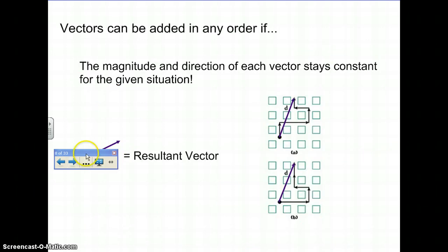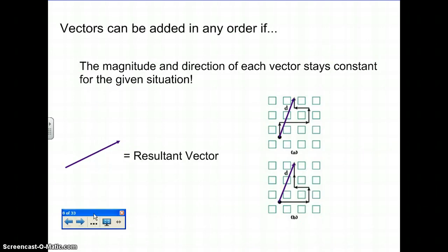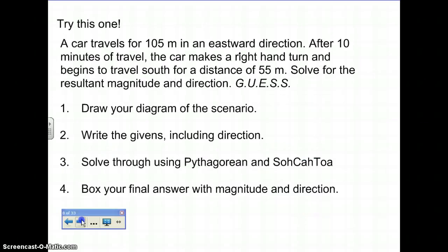Vectors can be added in any order. You could move this way first, this way second, this way third, and still end up at the same placement, as long as direction and magnitude do not change. You can order them in any direction.